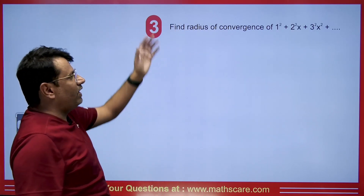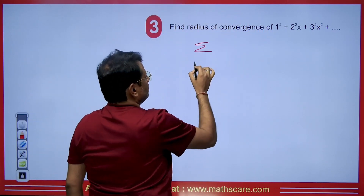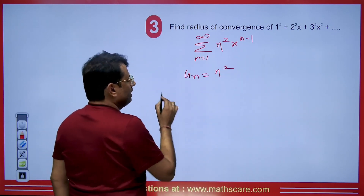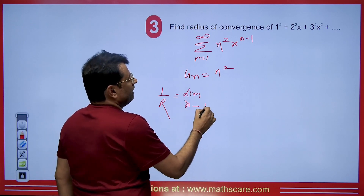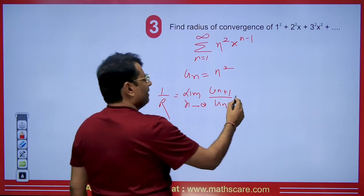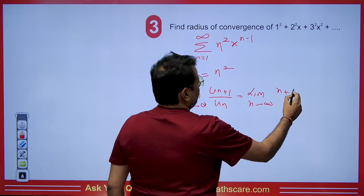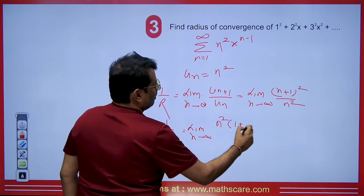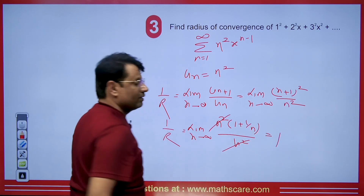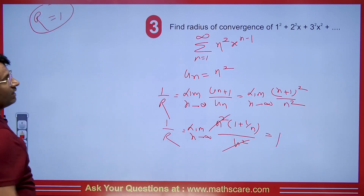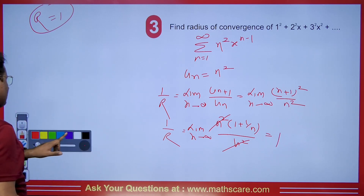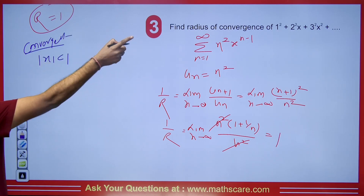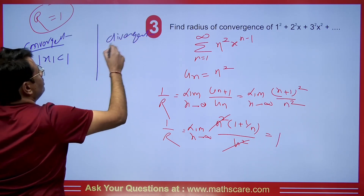In the next question, we find the radius of convergence of Σ from n=1 to infinity of n²x^(n−1). Here uₙ = n². We apply the D'Alembert ratio test: 1/R = lim(n→∞) |uₙ₊₁/uₙ| = lim(n→∞) (n+1)²/n². Taking n common, n² cancels and the limit is 1. So R = 1. The series is convergent for |x| < 1 and divergent for |x| > 1.